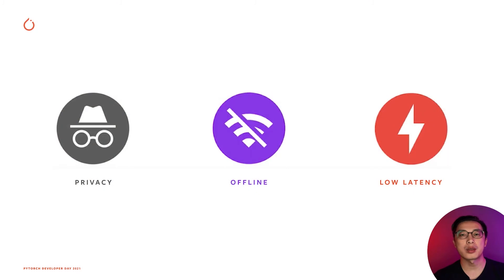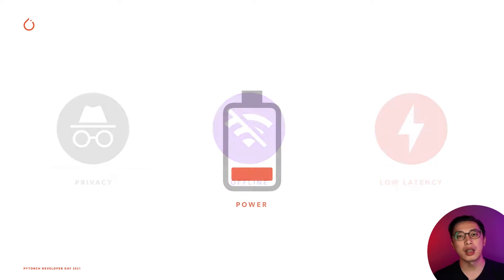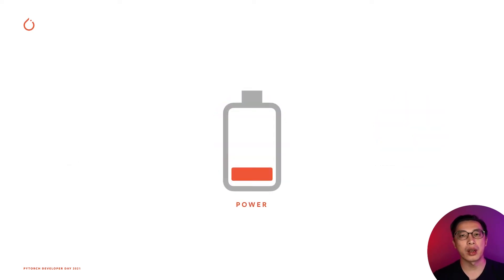On-device machine learning can bring a range of benefits by moving computations to be local with data. It can improve privacy, ensure our features work even without internet connectivity, and reduce latency. But on mobile devices, we are always power-constrained, so it's critical that we perform computations as efficiently as possible.